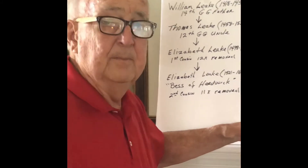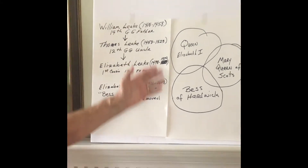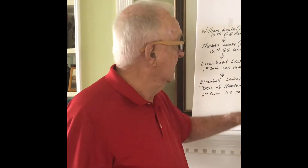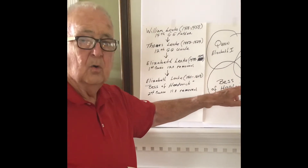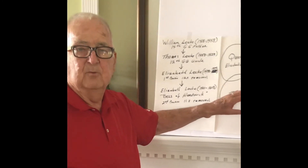My next session is going to be on Bess of Hardwick's granddaughter, whose name is Arabella. She married into the Stewart family, and Arabella was in line to be the next queen. I'm going to tell you all about that in our next session. For right now, I'm going to give you a recap of the line between Alan of Leek and my grandmother, and then I will also give you a picture of Hardwick Hall — it's a beautiful building today.